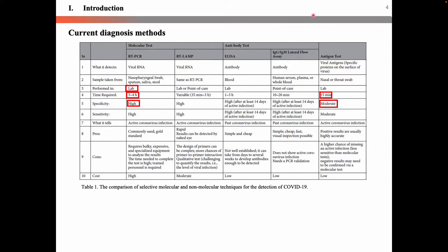On the contrary, the rapid antigen test cost is very low compared to RT-PCR, but this method has a higher chance of missing an active infection. Also, negative results may need to be confirmed via a molecular test. Despite these cost points, the antigen antibody test is used very actively because of the rapid increase in the number of patients.